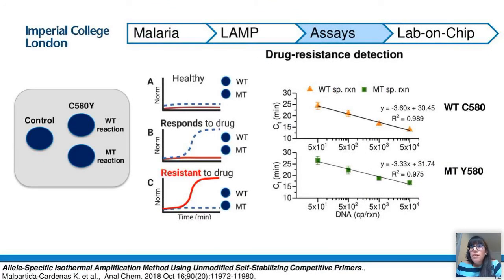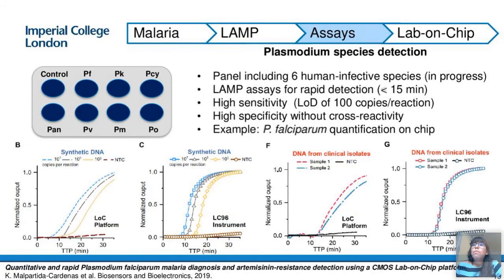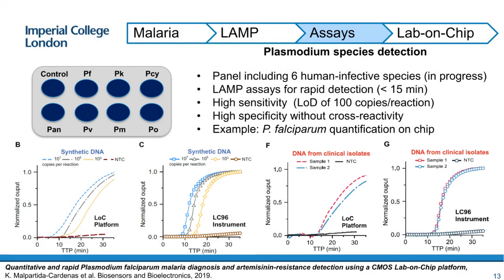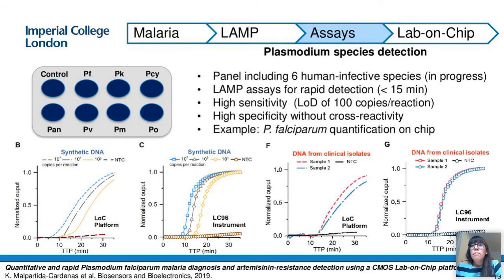The proposed lab assay targeting drug resistance is capable of diagnosing patients who may be infected with drug-resistant malaria in under 30 minutes. On the other hand, we are working on a panel for the specific detection of different plasmodium species, developing LAMP assays targeting all six human-infective species, all performing in under 15 minutes with high sensitivity and specificity. As an example, we have published a LAMP assay targeting Plasmodium falciparum and demonstrated the capability of quantifying it on our laboratory platform, with results comparable to a commercial instrument.